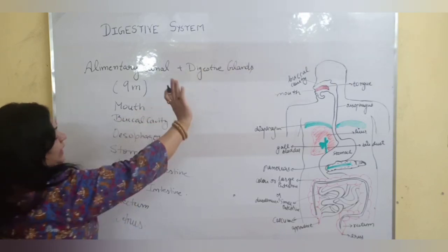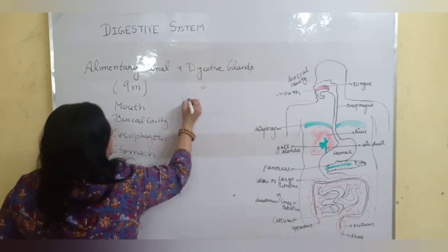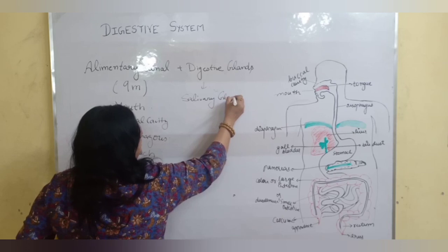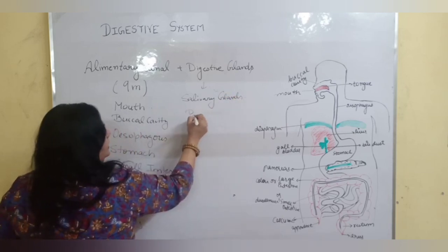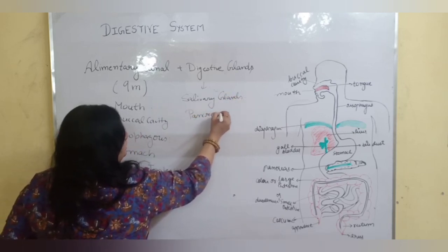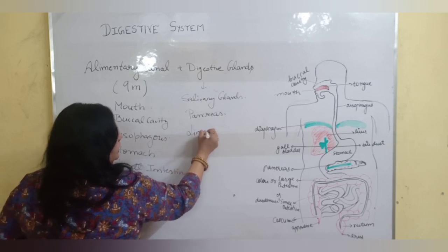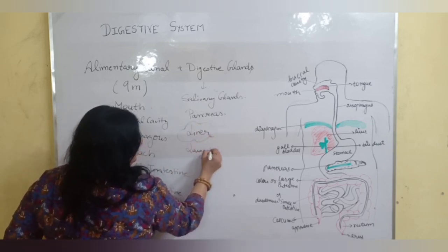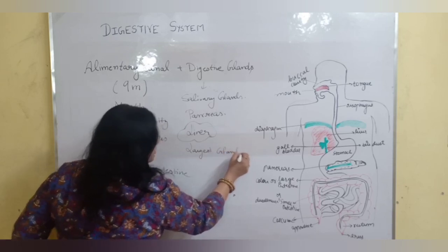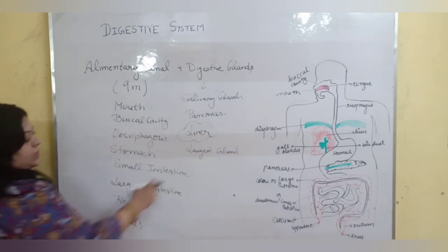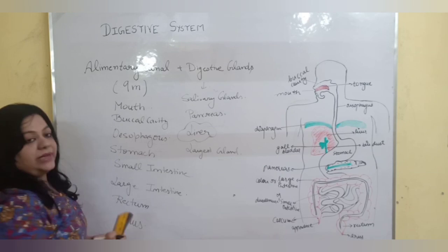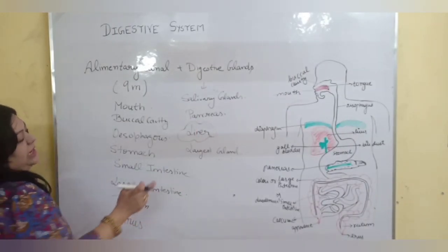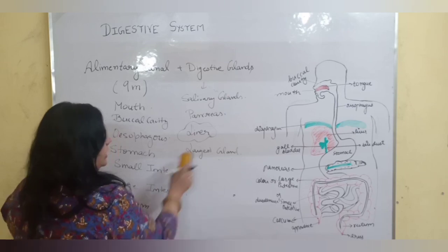Plus digestive glands. The digestive glands are salivary glands, which are present in the mouth, pancreas, and liver. Liver is the largest gland present inside the human body — this question is asked many times. The largest gland in the human body is the liver.